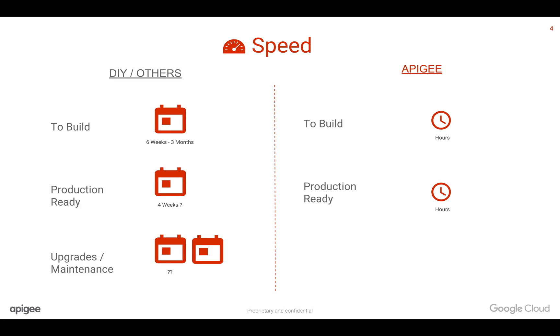Using Apigee Edge, you can literally secure your APIs within a matter of hours. It takes the same time to go to production — just a matter of hours — and you don't need to worry about upgrades and maintenance because Apigee takes care of it.